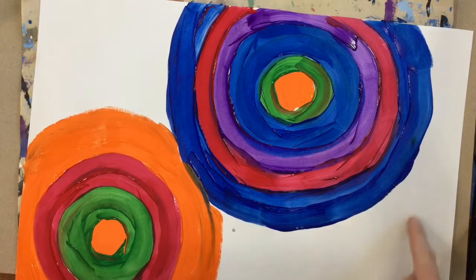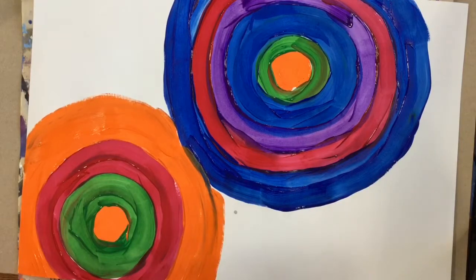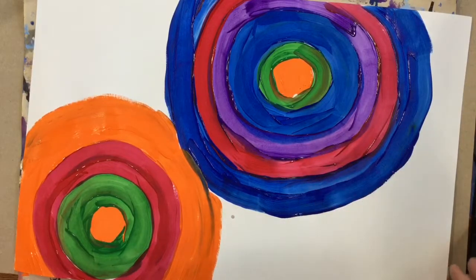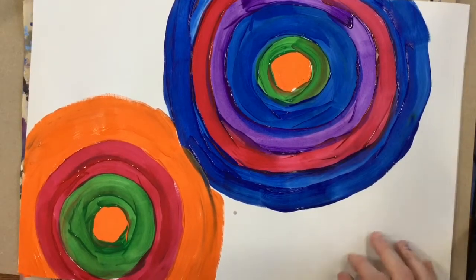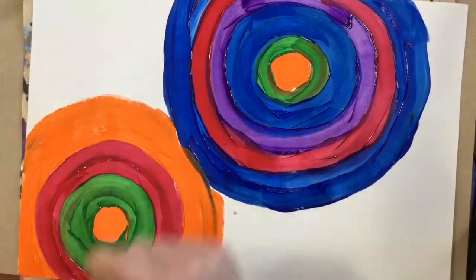You can either just fill in the rest of the background with one color, or you can keep doing circles all the way out to the edge of your paper. It's up to you. But I do need to see a lot of circles, a lot of different colors, but I will leave it up to you whether you paint the rest of this just one color, or concentric circles.